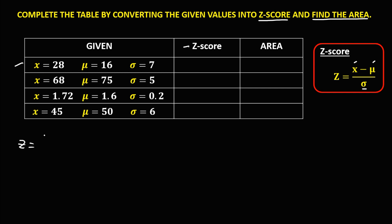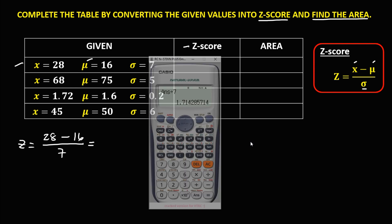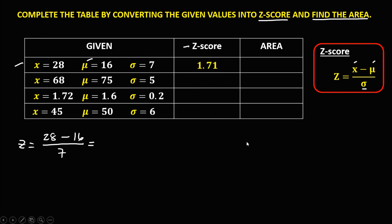For the first given, we have the X value of 28, minus the mean of 16, over the standard deviation of 7. So 28 minus 16 equals 12, then divide by 7 equals 1.71. So the Z-score is 1.71.